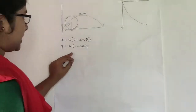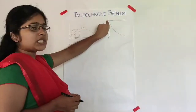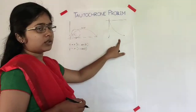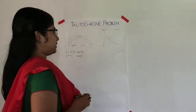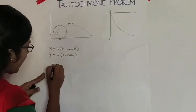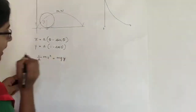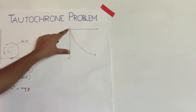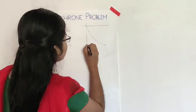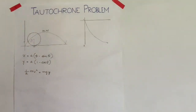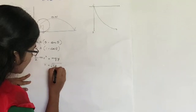The body is falling from this point under the force of gravity. By conservation of energy, the total kinetic energy equals mgy, where y is the distance fallen. Therefore the velocity v equals root of 2gy.